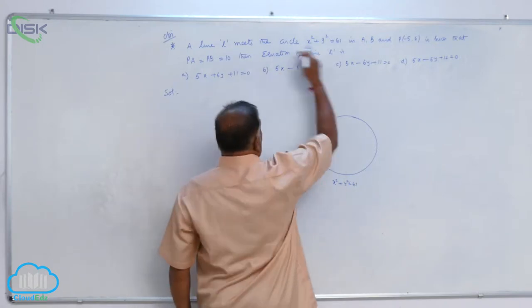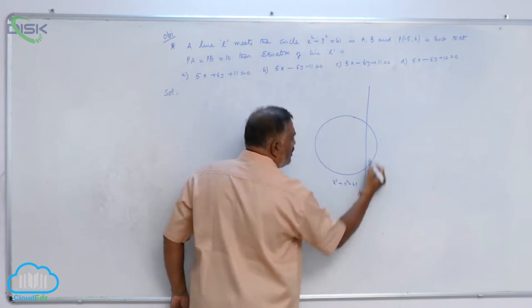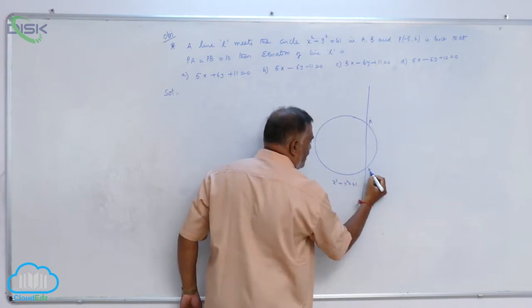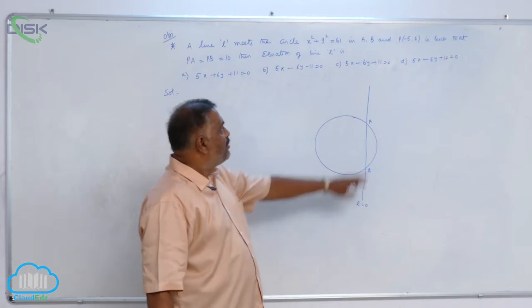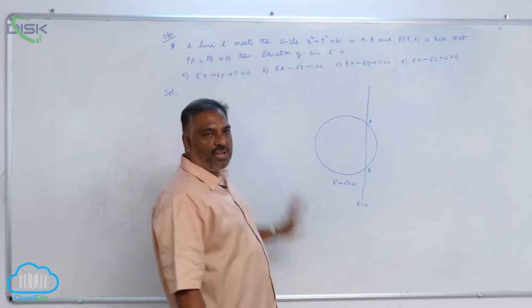A line L, L equal to 0, meets the circle at A and B. Point P minus 5, 6 is such that PA is equal to PB equal to 10.